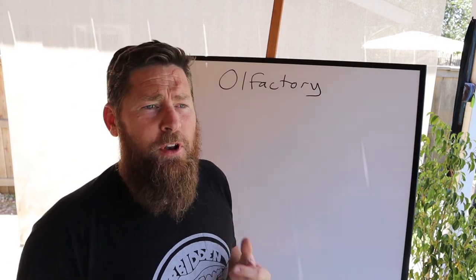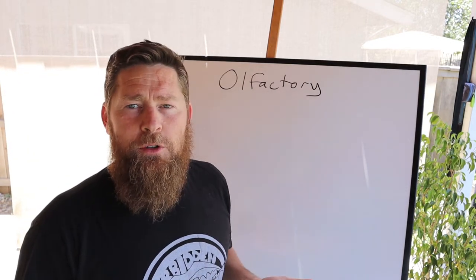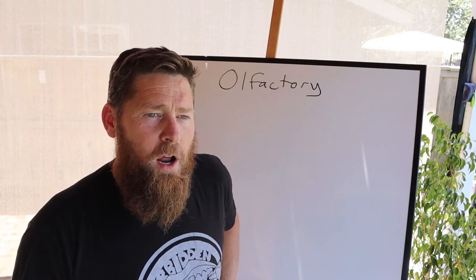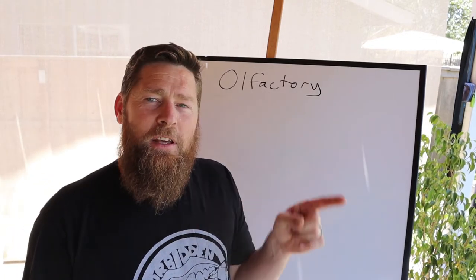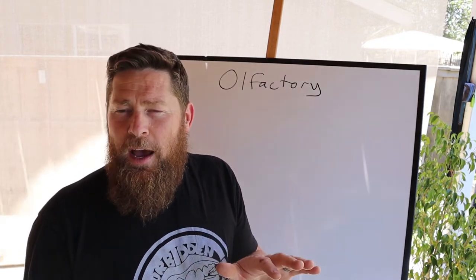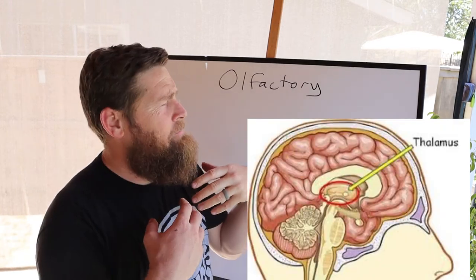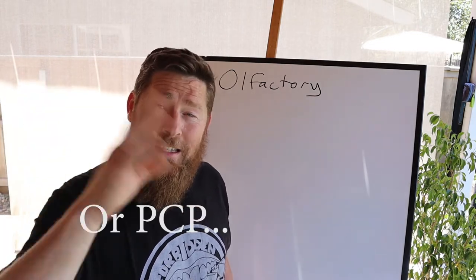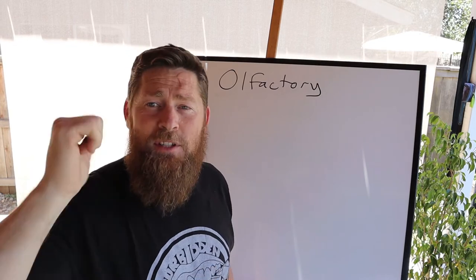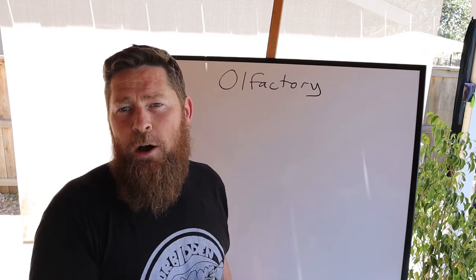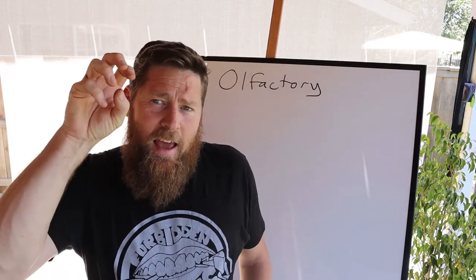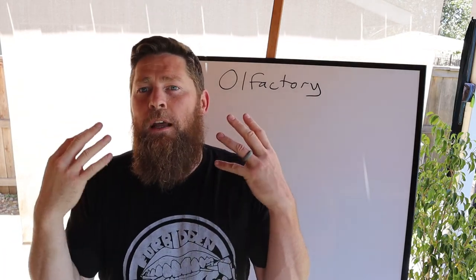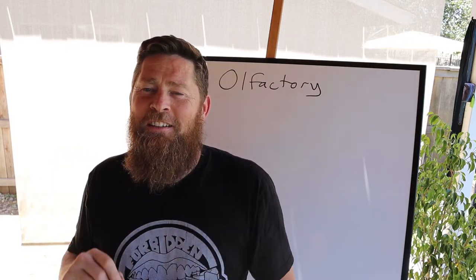Smell is a really interesting phenomenon because it's something that other animals rely on heavily, whereas humans don't rely as much on smell as we often should. All other senses you have are routed through something called the thalamus, which basically filters your input — it regulates how much sensory input you get. If you take hallucinogens like ketamine or LSD, what they do is stop your thalamus from regulating that sensory input. Your olfactory sensation, however, is not regulated by your thalamus.